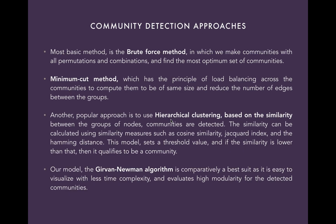There are various approaches for community detection, the most famous being the brute force method, the minimum cut method, and hierarchical clustering based on similarity measures. The brute force method makes communities based on all permutations and combinations and then finds the optimum set of communities. The minimum cut method has the principle of load balancing across communities to compute them to be of the same size and reduce the number of edges between the groups.